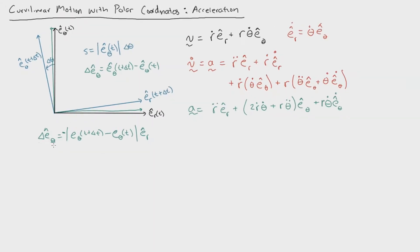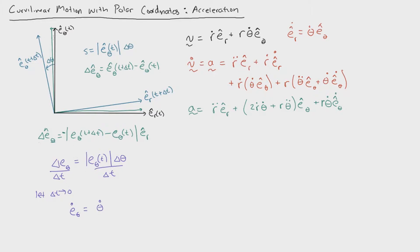We can now relate this change in e_theta to the arc length we found earlier. The change in e_theta equals the magnitude of e_theta at a given time times delta theta. Taking the ratio with respect to time on both sides and letting delta t go to zero, we get that e_theta_dot equals theta_dot. Specifying orientation: since that small change points in the opposite direction of e_r, we conclude that e_theta_dot equals negative theta_dot times e_r.